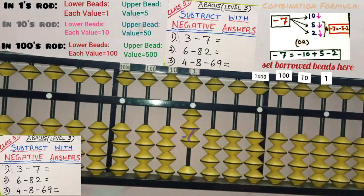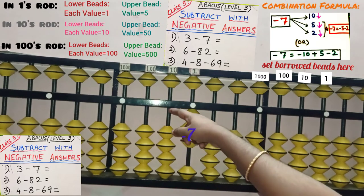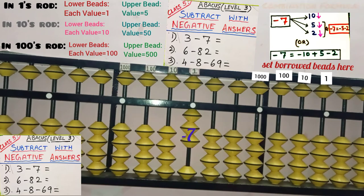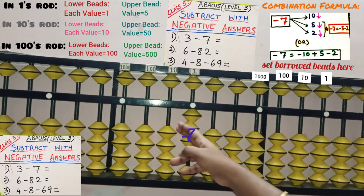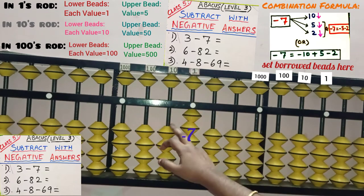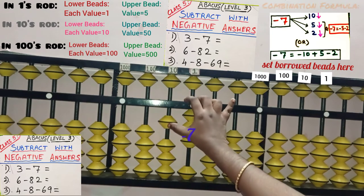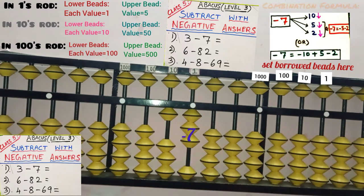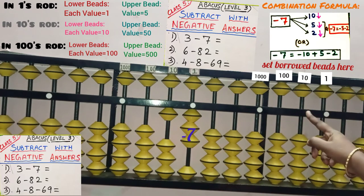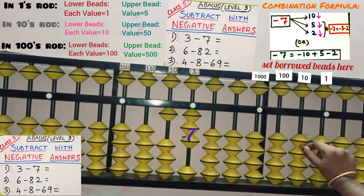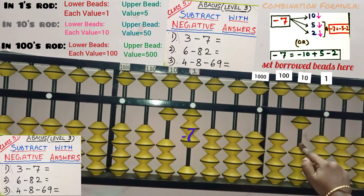The combination formula for minus 7 is: 10 downward, 5 downward, 2 downward. We need to move 10 beads downward in this rod. But in 10's rod, no beads are available to remove. In this situation, we need to borrow 1 bead from 10's rod to apply the formula. Set 1 bead in 10's rod — that is, 10 beads are borrowed. Set the same 10 beads in the right side part. So 1 bead in 10's rod is borrowed.